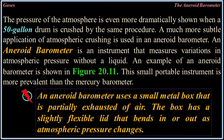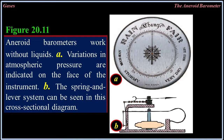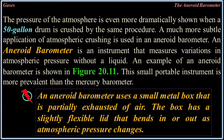A much more subtle application of atmospheric crushing is used in an aneroid barometer. An aneroid barometer is an instrument that measures variations in atmospheric pressure without a liquid. This small portable instrument is more prevalent than the mercury barometer. An aneroid barometer uses a small metal box that is partially exhausted of air. The box has a slightly flexible lid that bends in or out as atmospheric pressure changes.